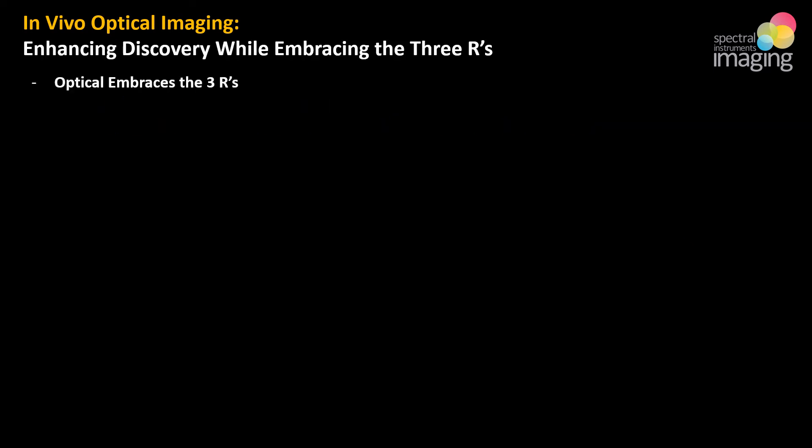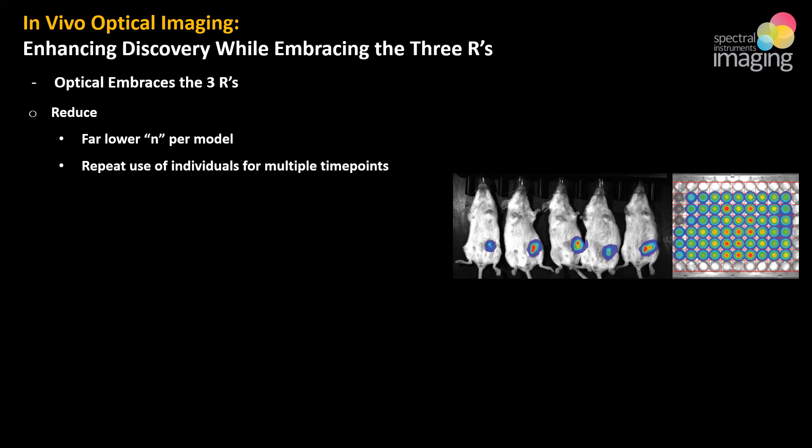So how does optical imaging assist with the three R's? Optical in vivo imaging fundamentally changed how animal models are imaged and analyzed, firmly embracing the three R's with fast, non-invasive, high-throughput, longitudinal data collection. With regards to reduction, optical imaging allows for a great reduction in the animal numbers needed for longitudinal studies — instead of sacrificing and performing histology at various time points, smaller numbers of animals can be imaged across a timeline.